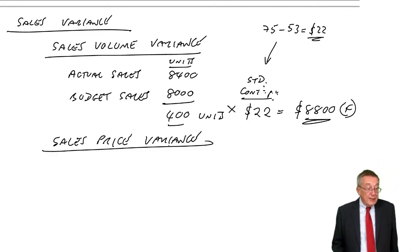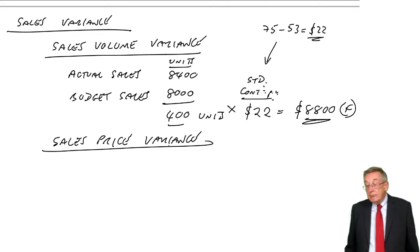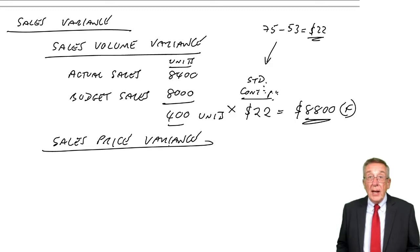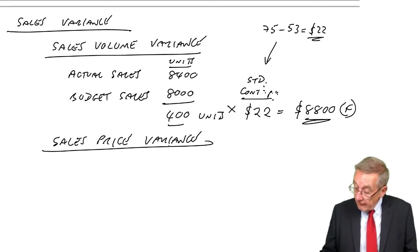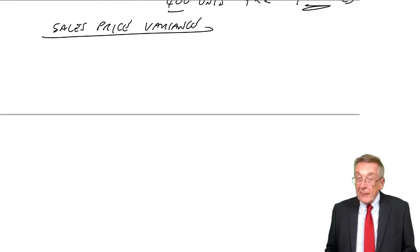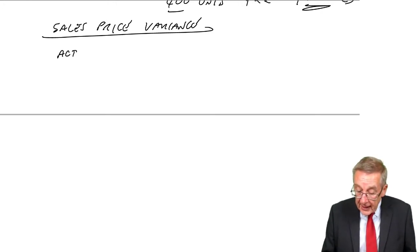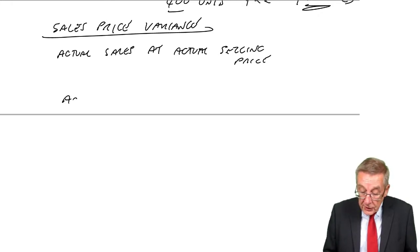Let's check sales price variance. We should have sold at $75 a unit. If we sell at more or less than $75, we make more or less profit. Let's check. All I care about is, did we sell at the right price or not? We take our actual sales at actual selling price. We compare with what we should have sold them at, actual sales at standard selling price.